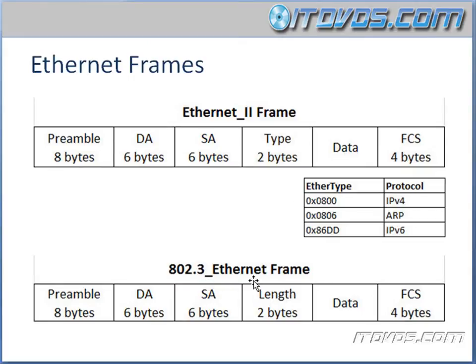With an 802.3 Ethernet frame, since it doesn't identify what protocol is being encapsulated, if it were to be used, it would actually add an 802.2 logical link control header that would specify what protocol is being encapsulated. That actually gives it more overhead because it adds another field. So those are our Ethernet frames, and we do need to know the fields — we want to memorize the different fields in our frames.